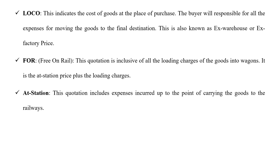The third type is at station. This quotation includes expenses incurred up to the point of carrying the goods to the railways. All costs up to where the goods are carried to the railways will be included in the quoted price. That is why it is called the at-station price.